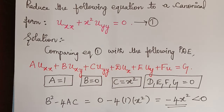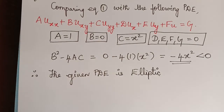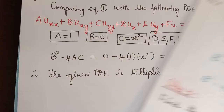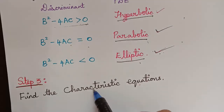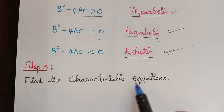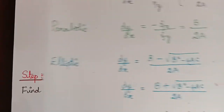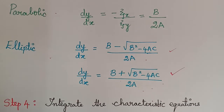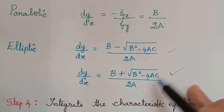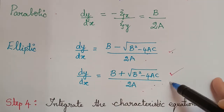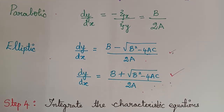Therefore, the given PDE is elliptic. After this, the next step is to find the characteristic equations. For the elliptic type, there are two characteristic equations that we have to find now.